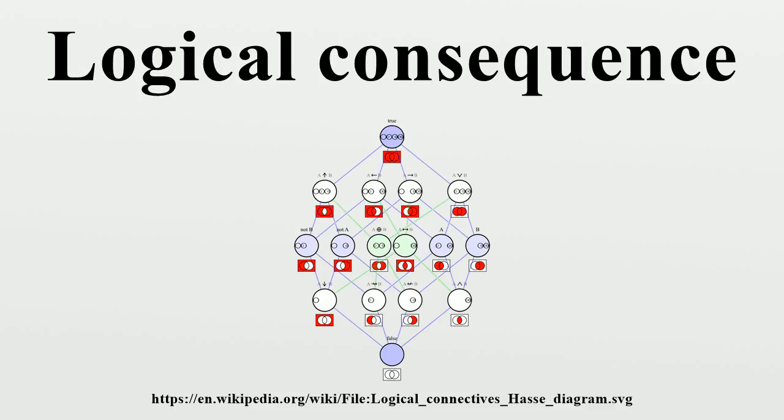Proofs and models. The two prevailing techniques for providing accounts of logical consequence involve expressing the concept in terms of proofs and via models. The study of the syntactic consequence is called proof theory, whereas the study of semantic consequence is called model theory.